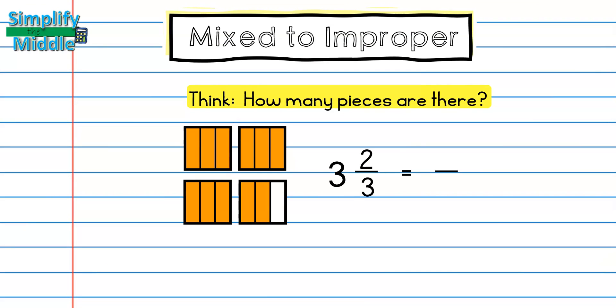Now let's go the other direction. Here we have a mixed number and we want to convert it to an improper fraction. We can look here and we see that we have three wholes and two thirds. Basically when you're converting to improper fraction, you want to ask yourself how many pieces are there. So I'm going to go ahead and count through my pieces.